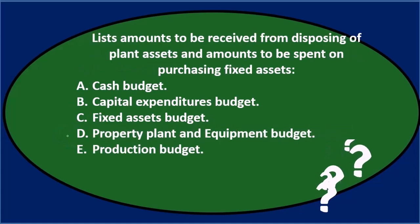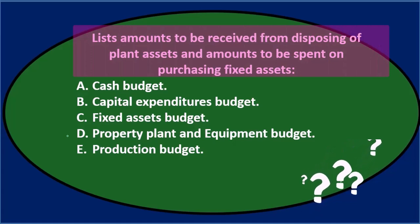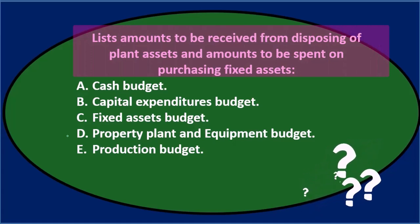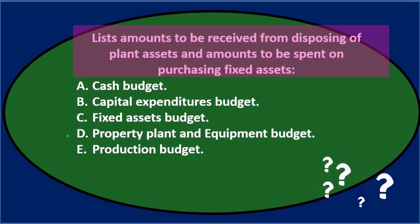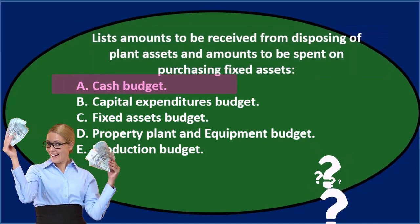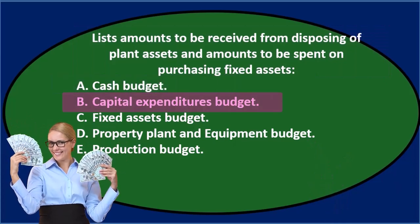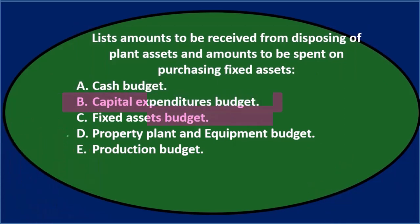Next question. Lists amounts to be received from disposing of plant assets and amounts to be spent on purchasing fixed assets. The options are: A. Cash budget. B. Capital expenditures budget. C. Fixed assets budget. D. Property, plant, and equipment budget. E. Production budget.